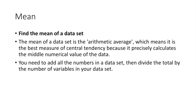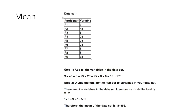To find the mean, you add up all the numbers in a data set then divide by the total number of variables in your data set. We've probably all done this before — we've calculated the mean, or what we often call the average. So we have this example here with a data set p1 to p9.